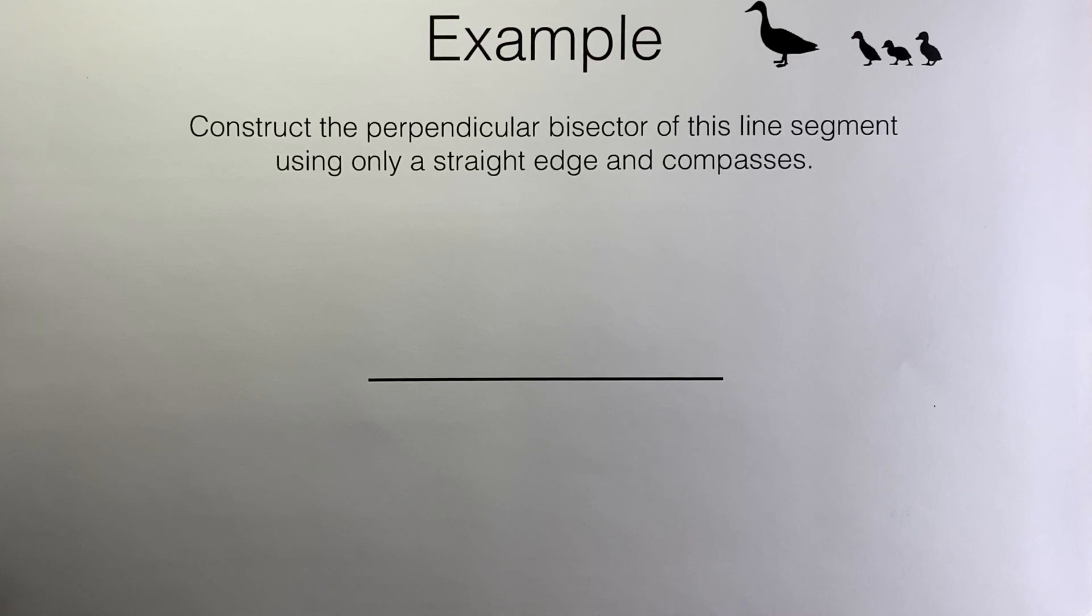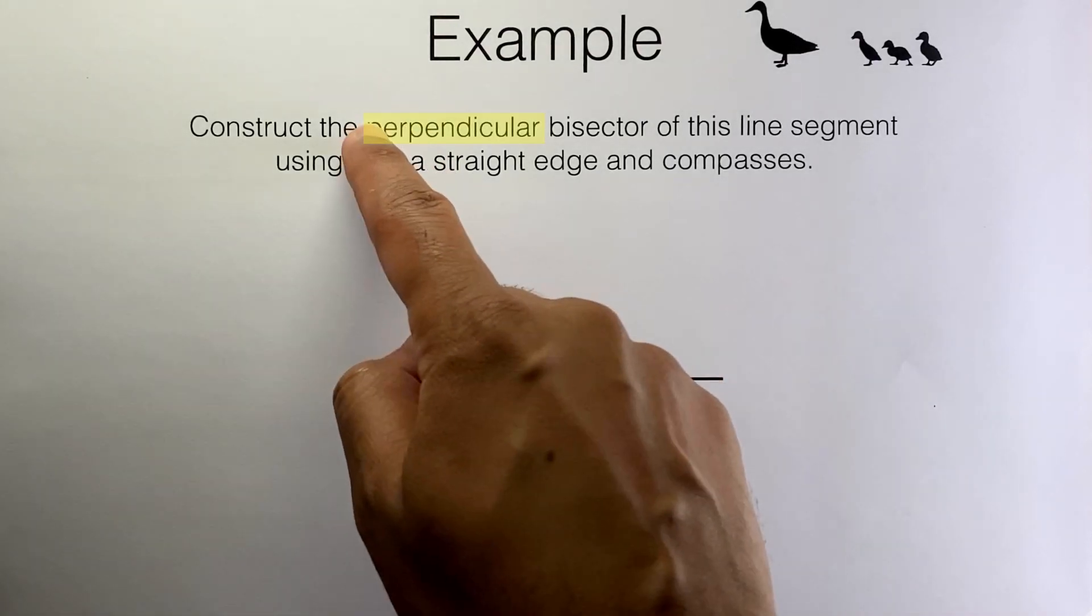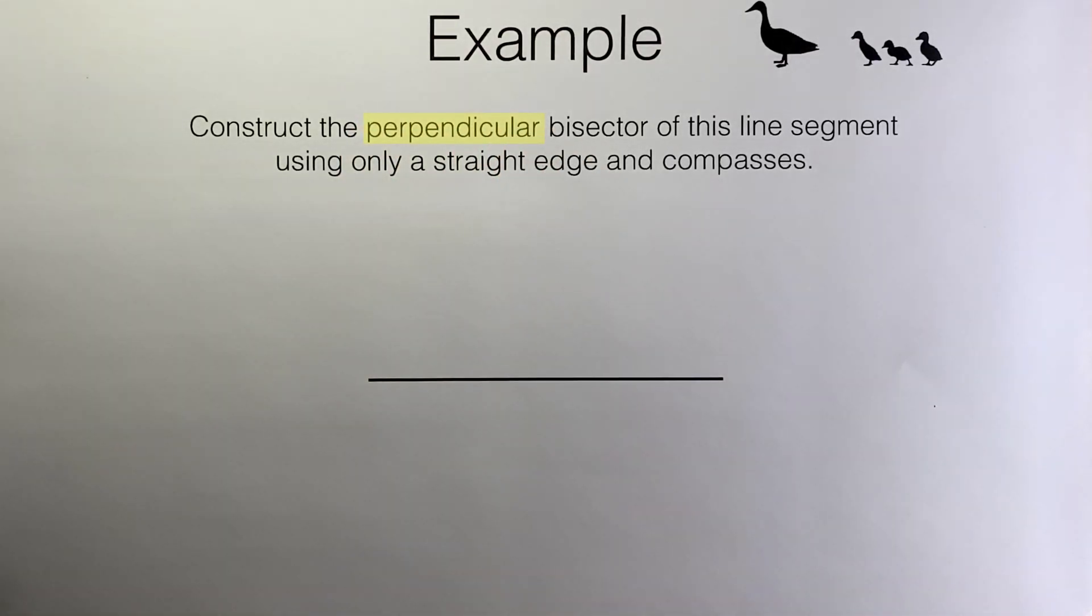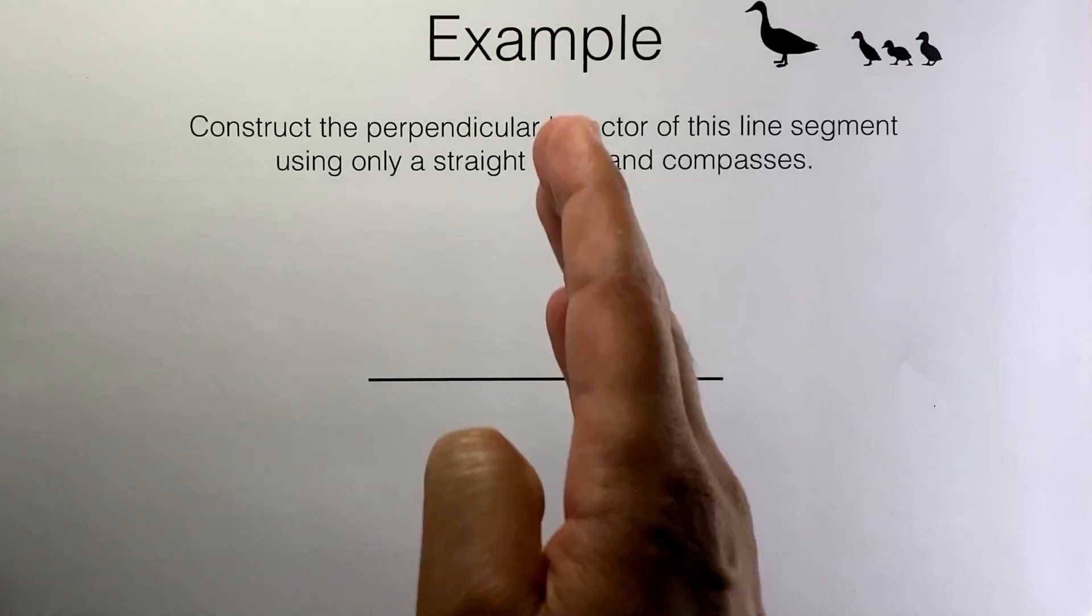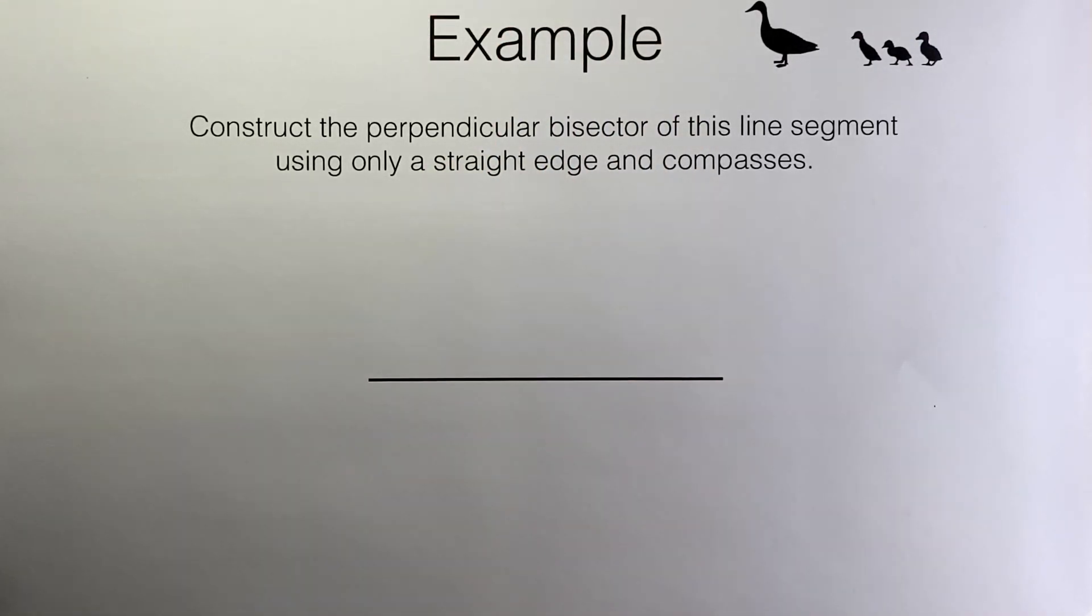Surprisingly we can do this without measuring the length of this line with a ruler. Now perpendicular means at right angles, so what we need to do here is split this line segment into two halves by drawing a line at right angles to this one. At right angles means at 90 degrees.